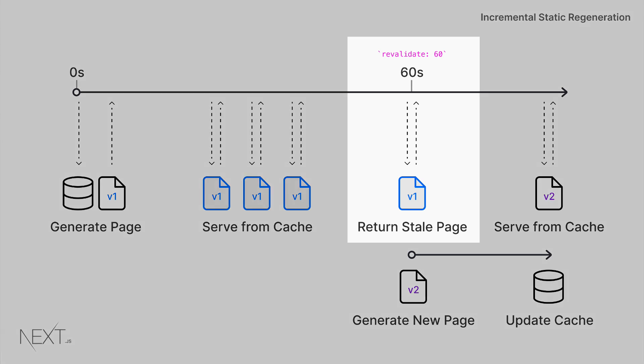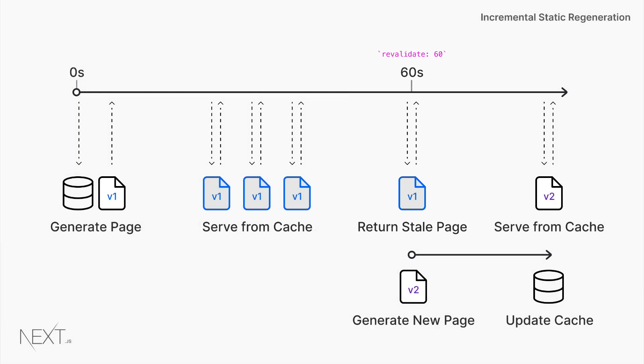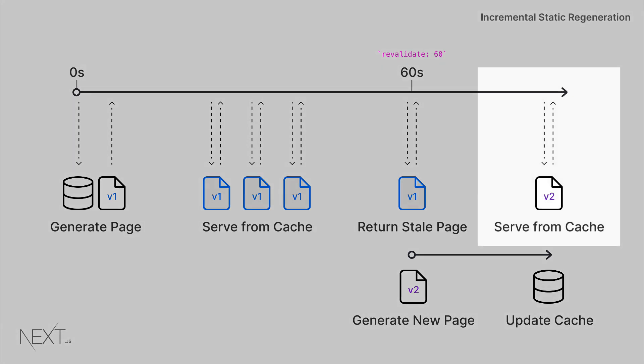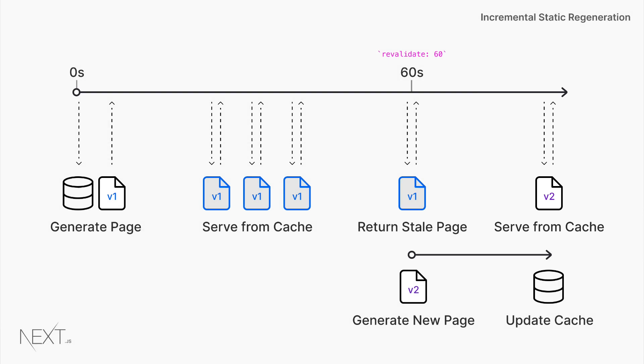After that 60-second window, the next request would still show the cached page — we call this the stale page. In the background, ISR is going to trigger a regeneration of the page and fetch the latest information from the CMS, so fetch that new price of $3.50. Once that page has been successfully statically generated, ISR will then invalidate the cache and show the new updated product page. If that background regeneration failed, the old page would remain unaltered — we wouldn't swap it out with a broken page.